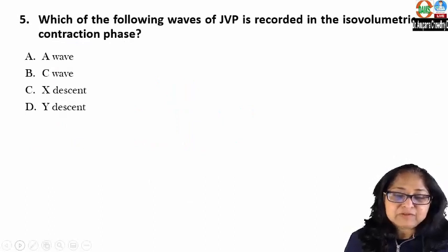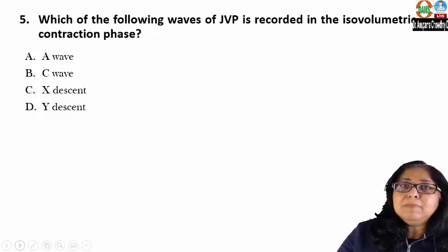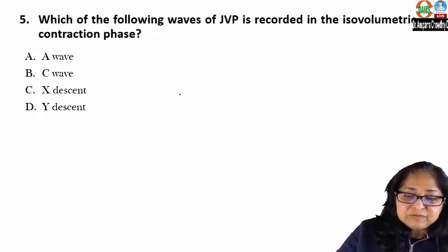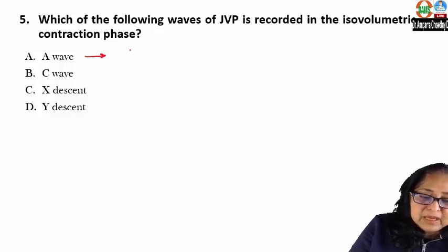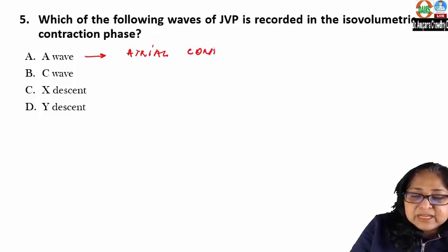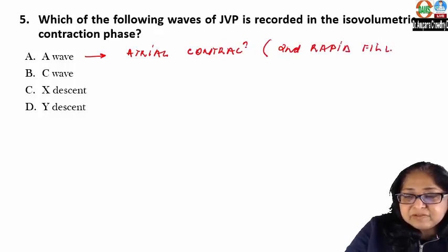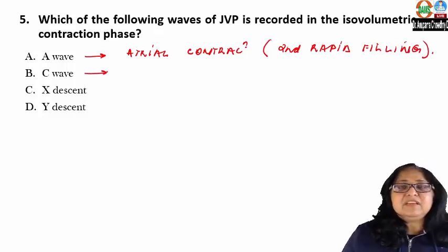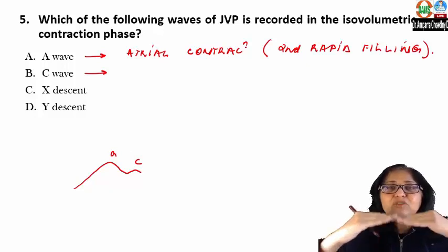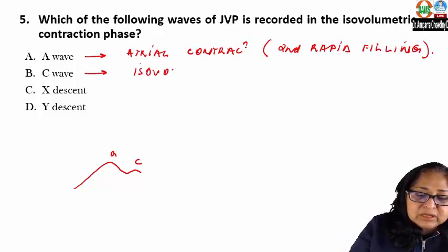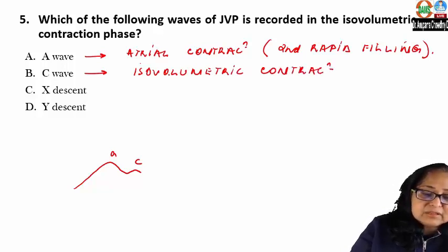Which of the following JVP waves is recorded in the isovolumetric contraction phase? JVP has multiple positive and negative waves. Positive waves are A, C, and V; negative waves are X descent and Y descent. The A wave is due to atrial contraction, occurring in the second rapid filling phase. The C wave is due to bulging of the closed tricuspid valve into the right atrium during the isovolumetric contraction phase — so the answer to this question is C.